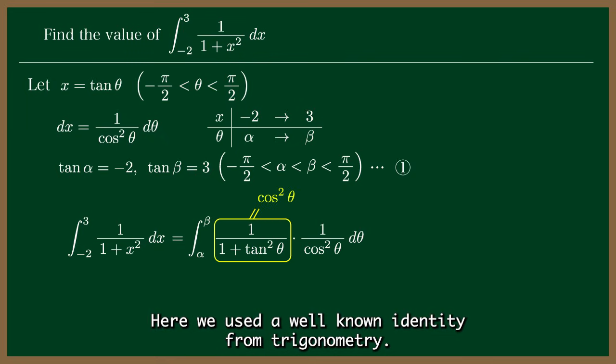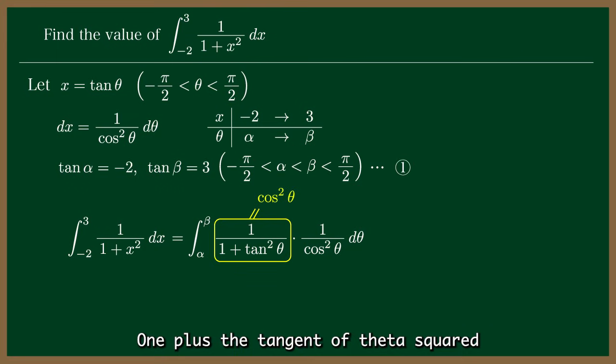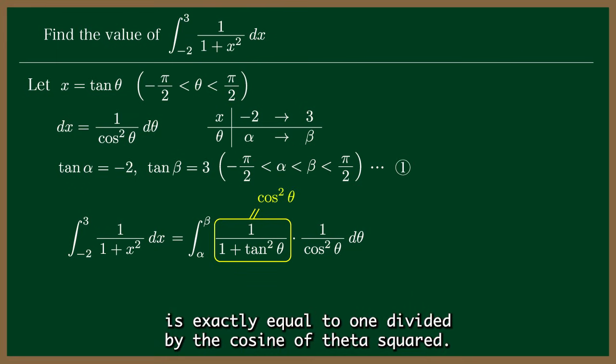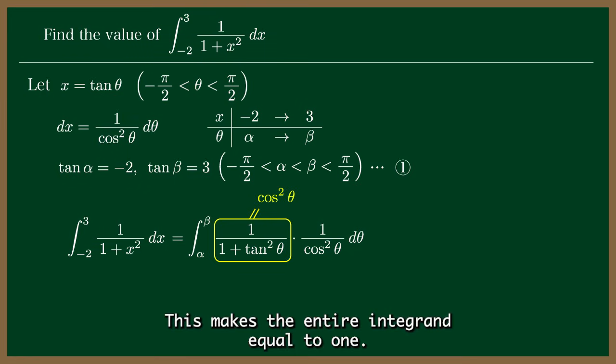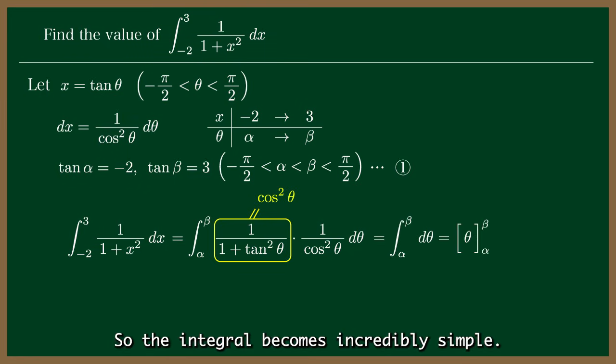Here, we use the well-known identity from trigonometry. 1 plus the tangent of theta squared is exactly equal to 1 divided by the cosine of theta squared. This makes the entire integrand equal to 1. So the integral becomes incredibly simple. Its value is just beta minus alpha.